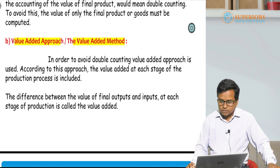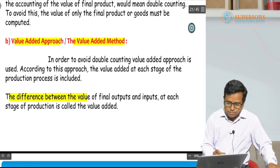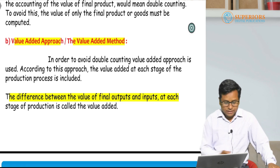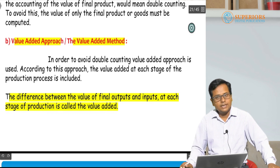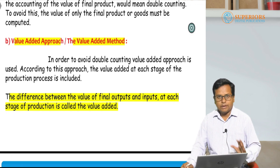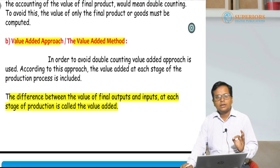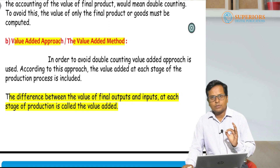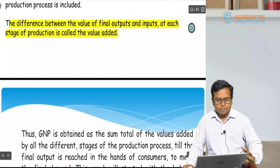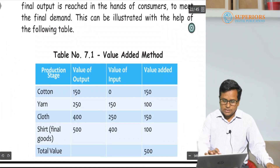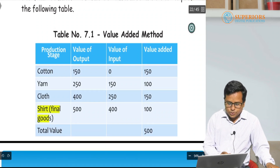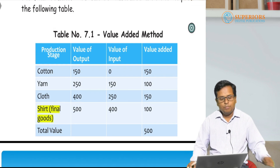Value added means the difference between the value of final output and the value of inputs at each stage of production. That difference between output and input is called value added. In this example, the final product is the shirt.